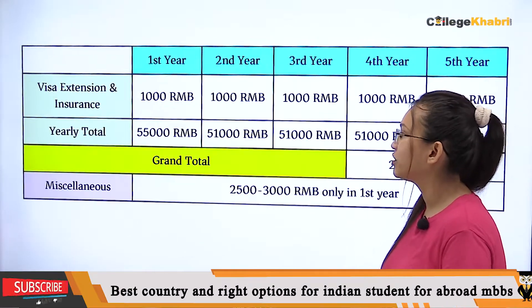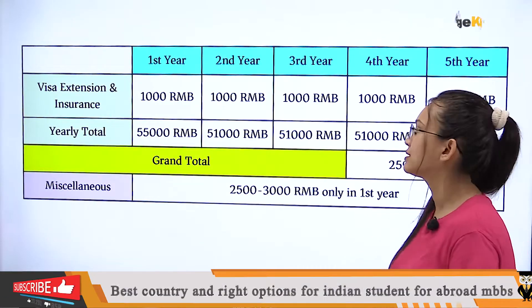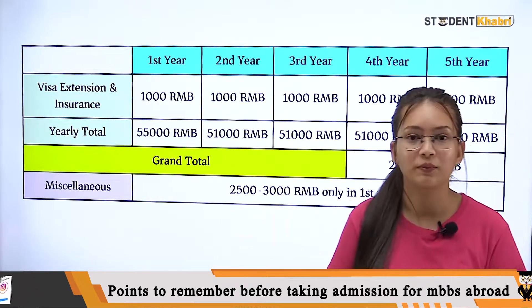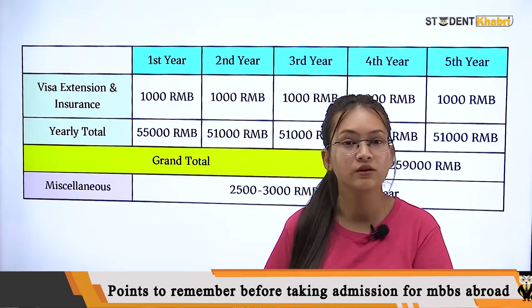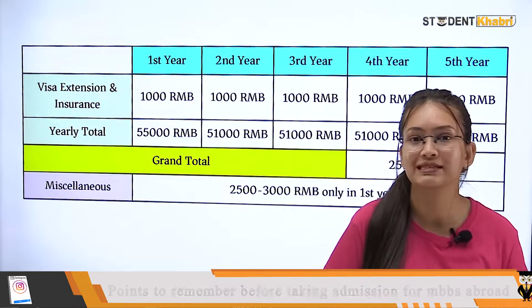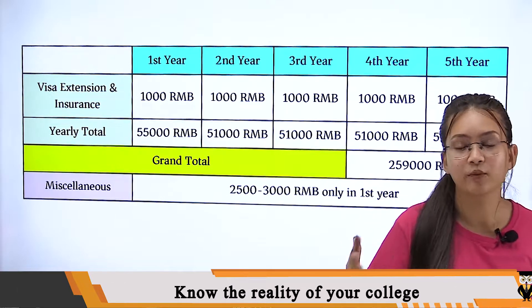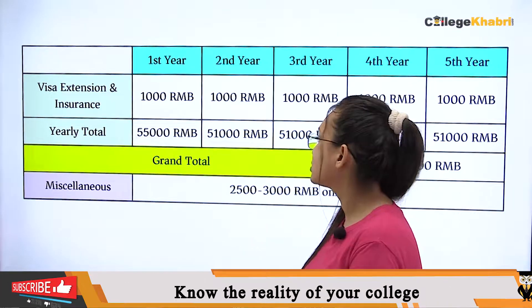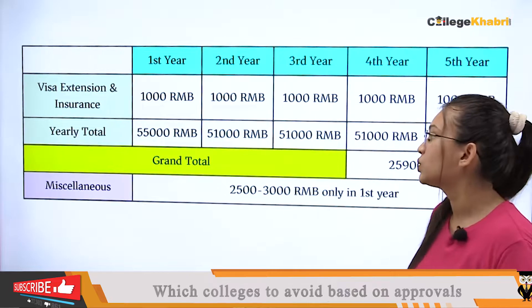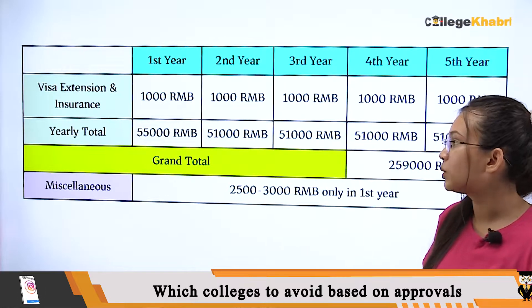Next, if you look at the visa extension and insurance, you have to pay for that every year as well — 1,000 RMB per year.